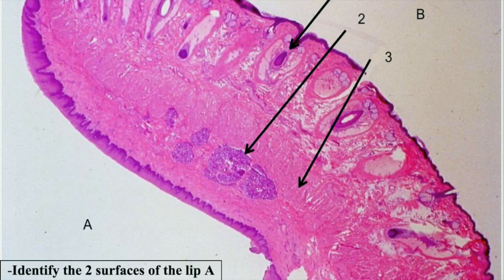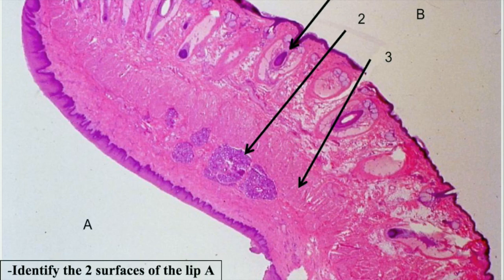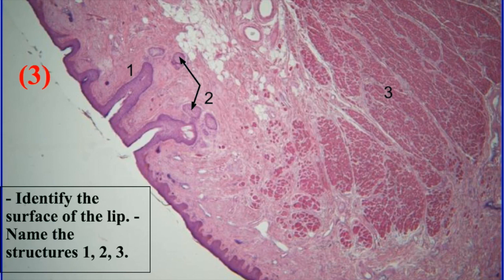In the second trial test slide: surface A is the inner side or mucous membrane, surface B is the skin side or outer surface of the lip. Label 1 is a hair follicle, label 2 is the labial glands, label 3 is the skeletal muscle which is an acidophilic mass present between the two sides. The third slide identifies the outer surface of the lip covered by skin: label 1 is a hair follicle, label 2 is sebaceous glands, label 3 is the skeletal muscle orbicularis oris, with blood vessels and fat cells also labeled.